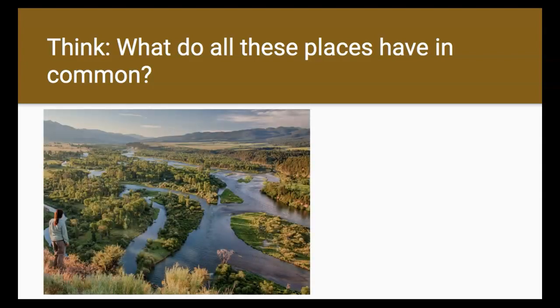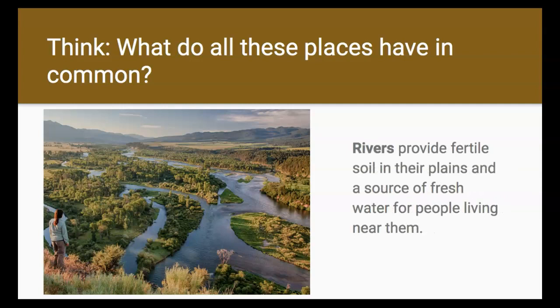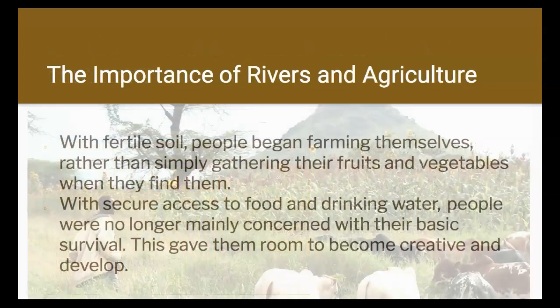If you guessed rivers, you were totally correct. The earliest civilizations rose near rivers because rivers provide fertile soil and a source of fresh water, so people living near them knew they could settle down and not worry about moving around for food and water. With fertile soil, people started farming, and with food security and access to drinking water, they were no longer concerned with their basic survival. They finally managed to settle down, divided their labor, and eventually became creative and made new developments.